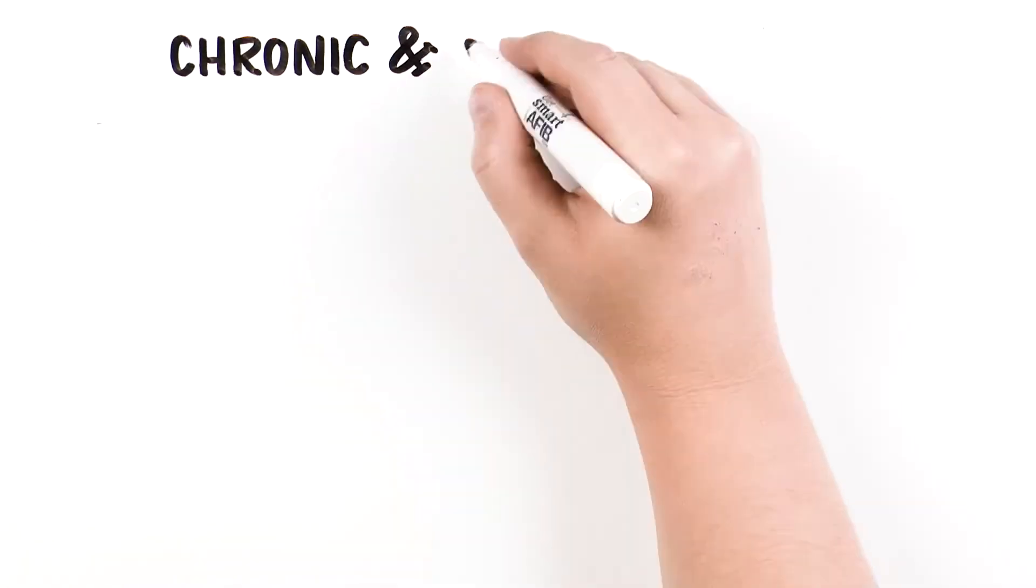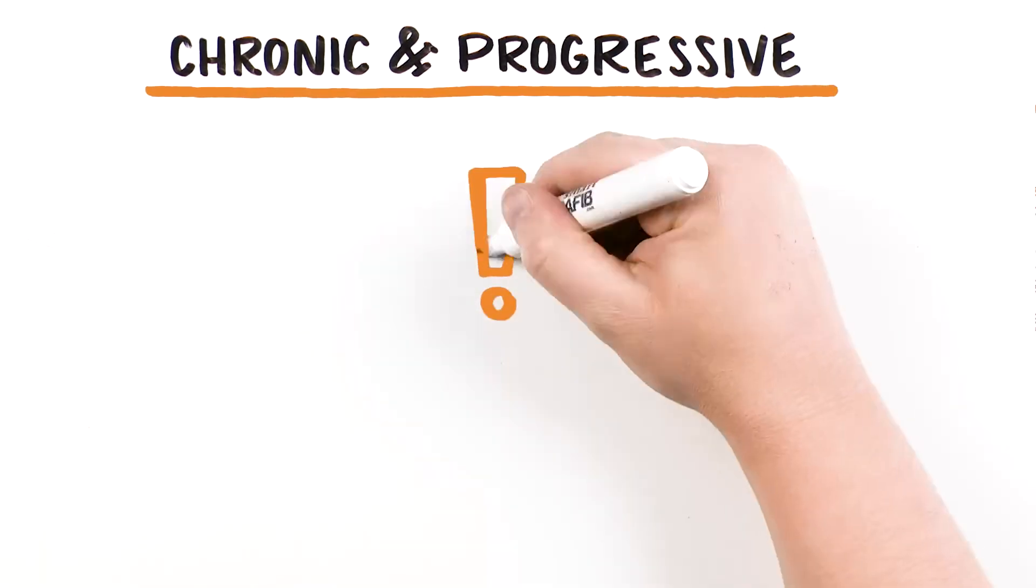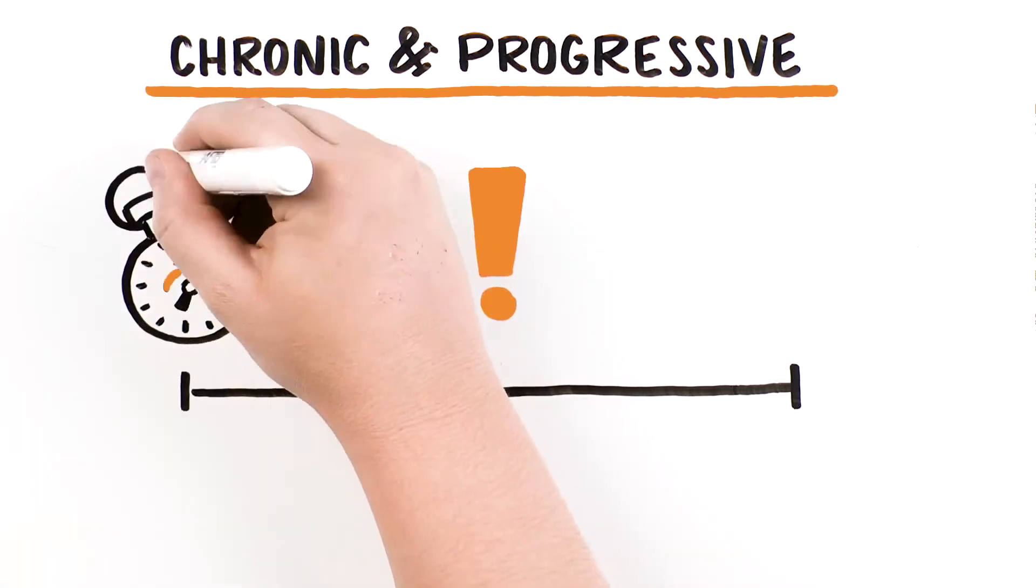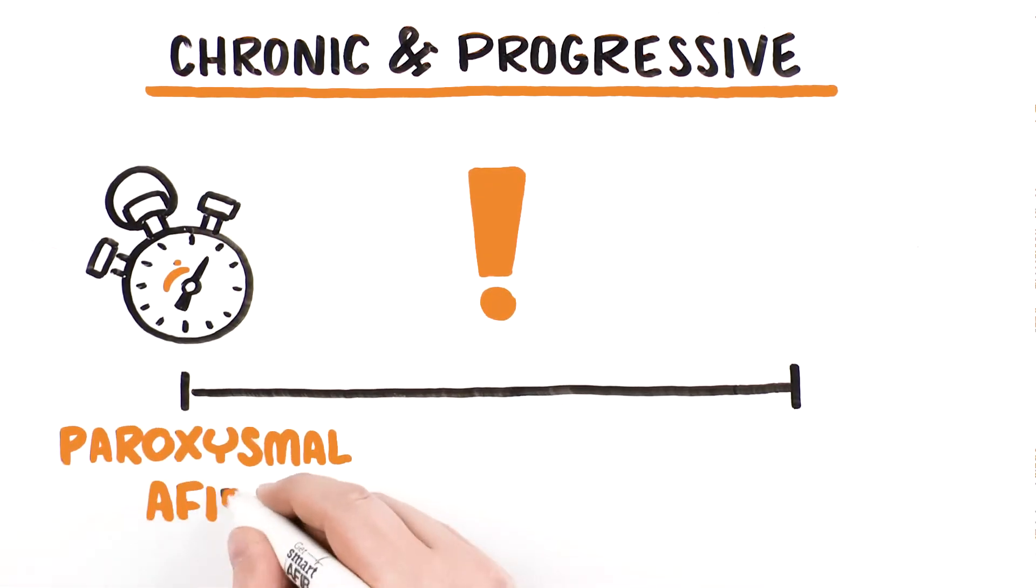AFib is also a chronic progressive disease that may worsen if untreated. Episodes of AFib can be short, lasting for brief periods of time. This is called paroxysmal AFib.